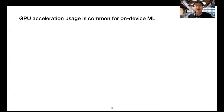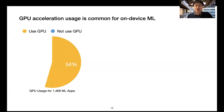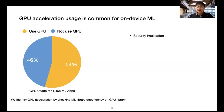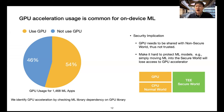We also find GPU acceleration usage is common for on-device machine learning — 54% of machine learning apps use GPU for acceleration. The security implication is that the GPU needs to be shared with the non-secure world, so it is not trusted. This makes it hard to protect machine learning apps, because simply moving machine learning into the secure world will lose access to the GPU accelerator.